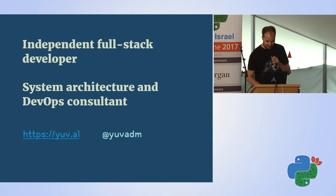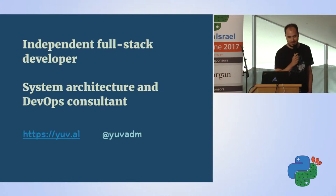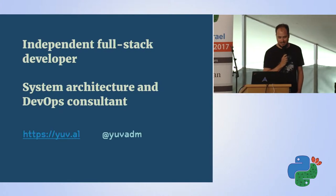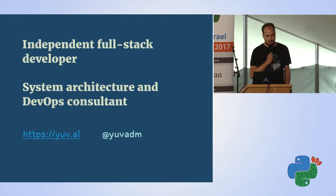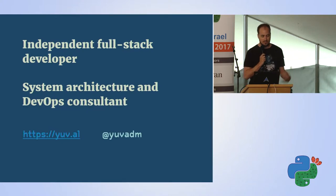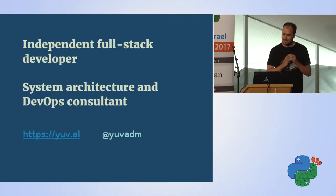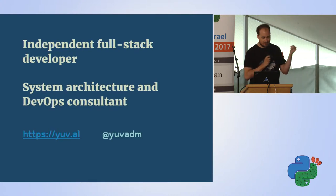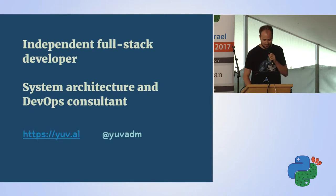A little bit about myself: I'm a full stack developer and I've been working mostly in Python for the past ten years. My day job today is system architecture and DevOps consultant, so I work with startups and software companies and help them build their systems. If you want to find me online, my domain name is exactly the same as my real name — it's YUV.AL. You can also find me on Twitter, and that's probably the best place to follow me.